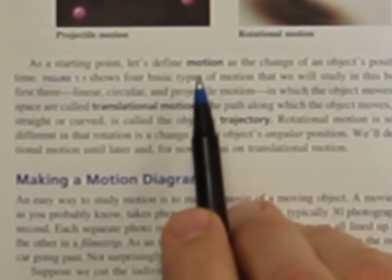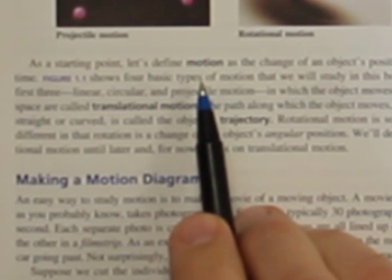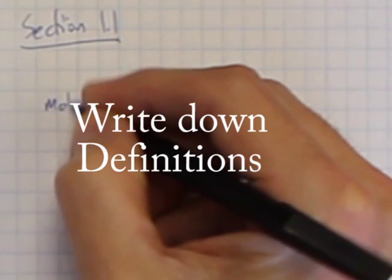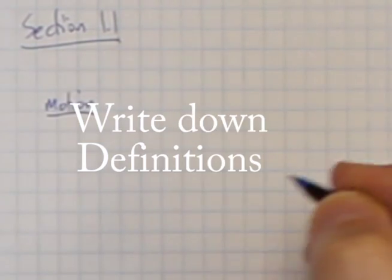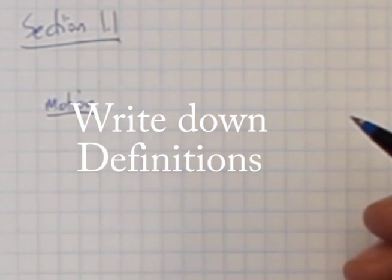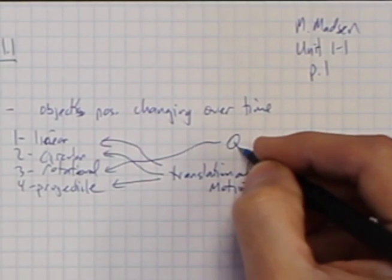When I reach a bold-faced word, this is an important concept, and I want to make sure that I write this down and define it in my own words. Motion. In this case, motion is the change of the object's position with time. So I've got the key idea written down.